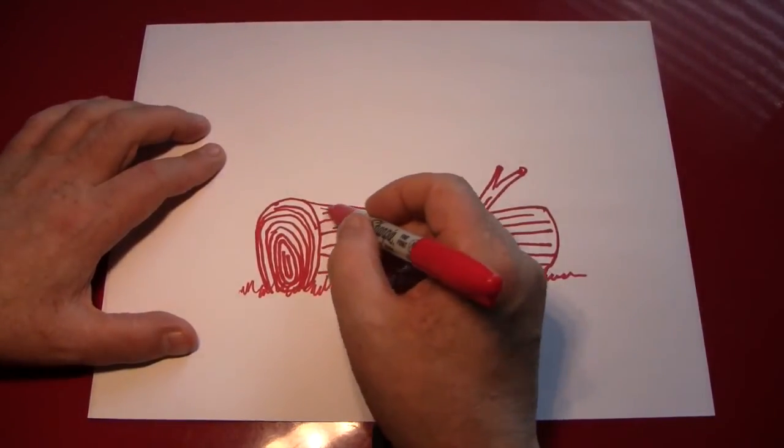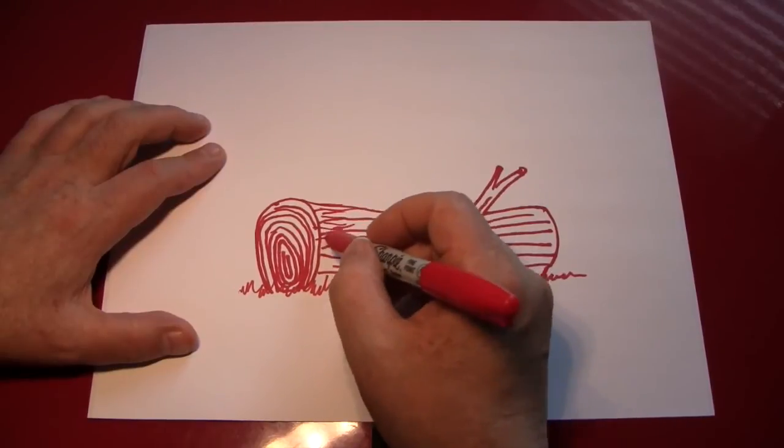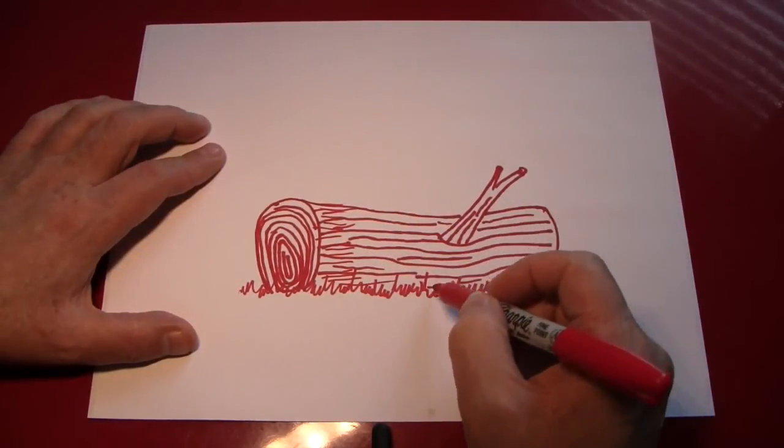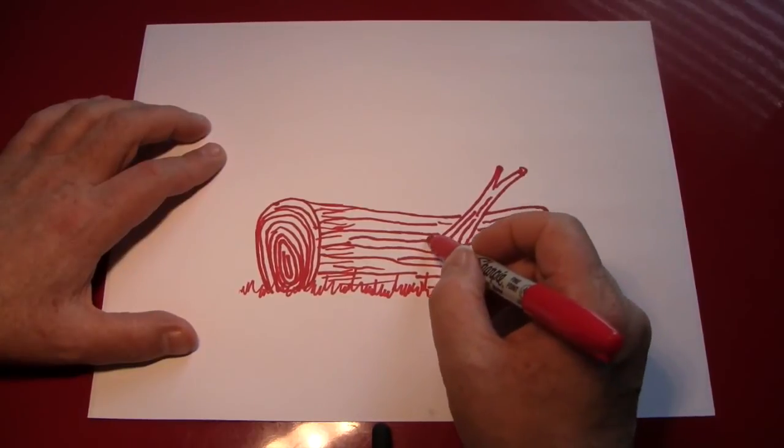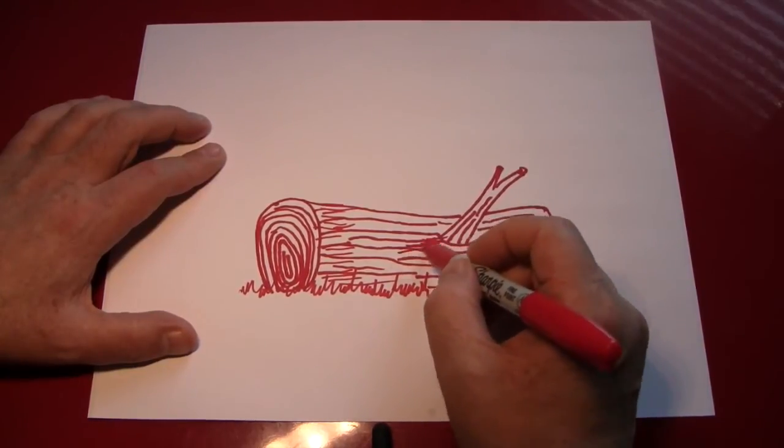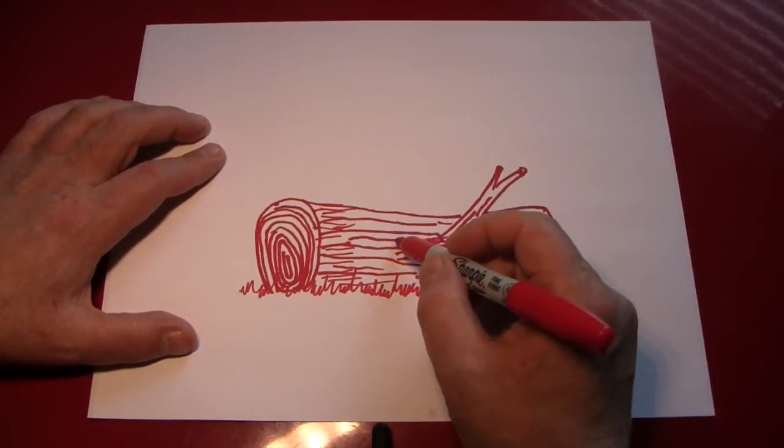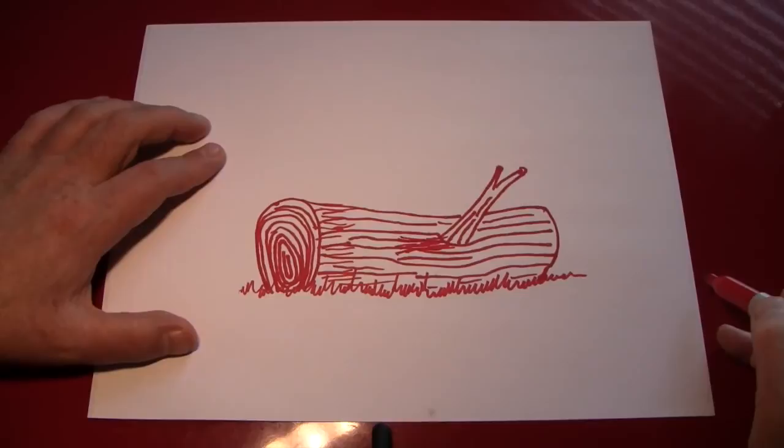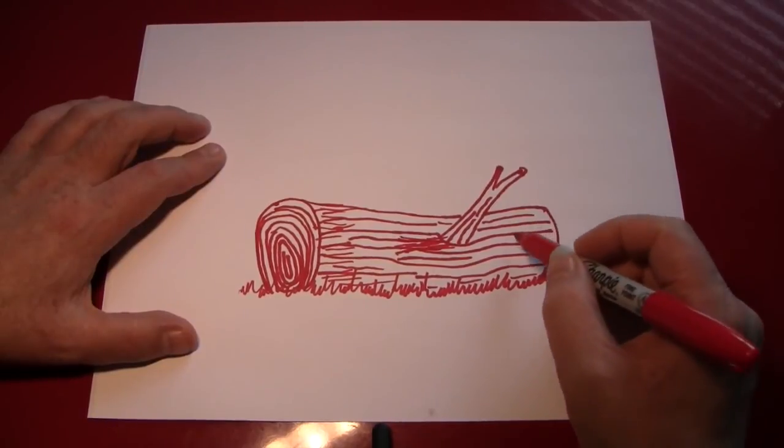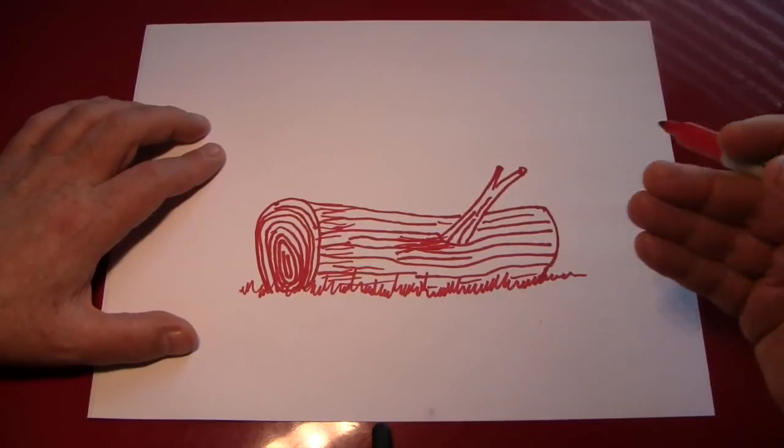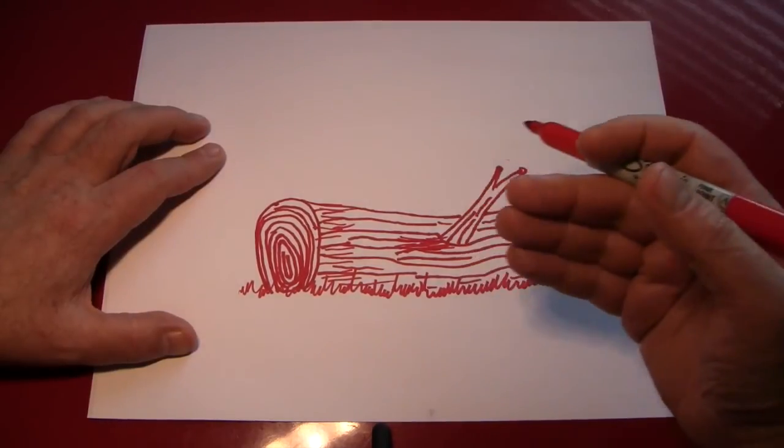Of course you can do some shading. You can shade where the branch makes a shadow. I don't know if I did that right, but I did it anyway. And anywhere where the tree bends. The light, which as we usually put it, is coming from the right.